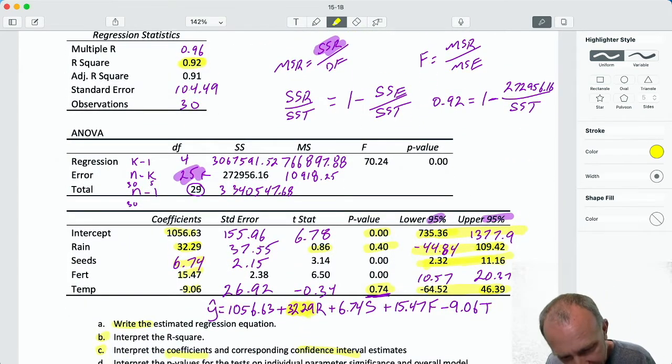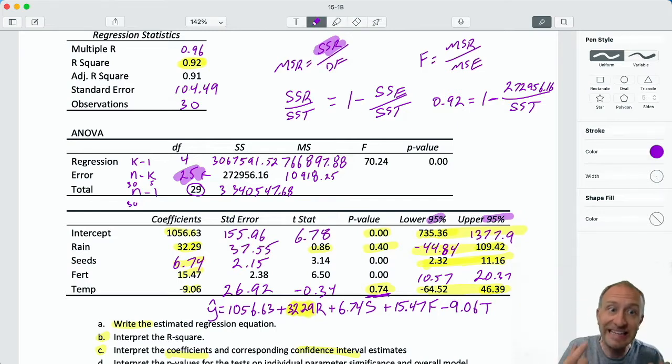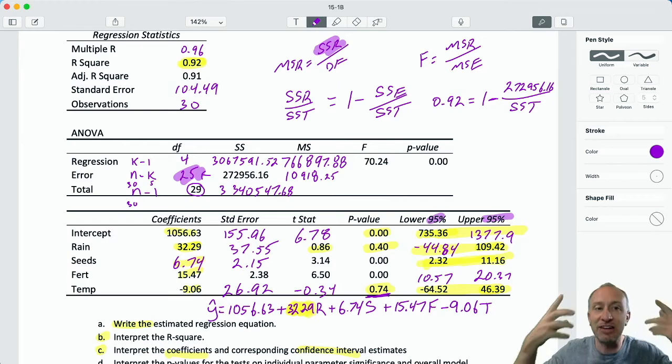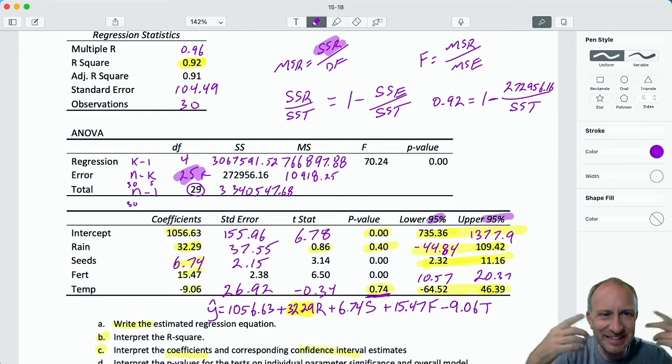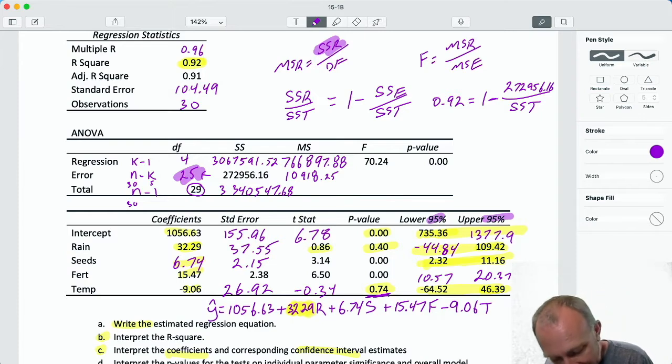So a one unit change in rainfall is an additional inch of rain. What effect does that have on the dependent variable? Well, what are our units of measurement of the dependent? Okay, wheat yield is measured in pounds. So with that information, now I can look at that coefficient and I can say, okay, for each additional inch of rain, because again, I always think in terms of positive changes, when I'm thinking of a marginal effect, I always think of an additional, just because it's easier for me to interpret positive changes than a negative change.